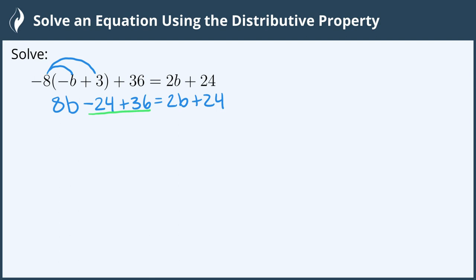To continue simplifying we can combine like terms. So we get 8b. Negative 24 plus 36 is positive 12, and we still haven't done anything to the right side.